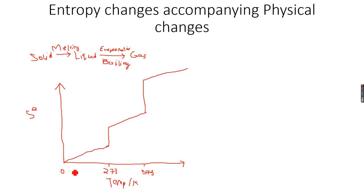So let's just interpret this graph. We have 0 entropy and 0 Kelvin over here; the temperature is 0 Kelvin, so it exists as a perfect crystal. And then as we heat it, as the temperature increases, it will gain energy and hence it will become more disordered. And as it becomes more disordered, the entropy will increase. At 273 Kelvin, where ice turns into water, there will be a steep increase in entropy. Because as you can see, it's a vertical line, there will be a steep increase in entropy, which indicates that temperature does not change during melting.